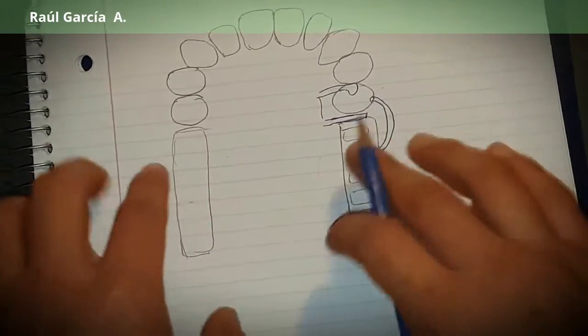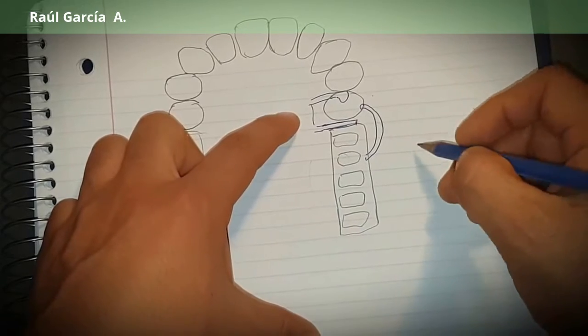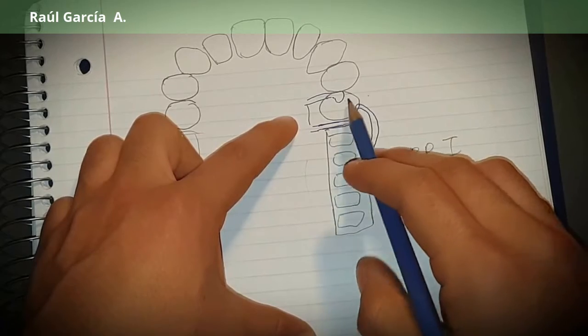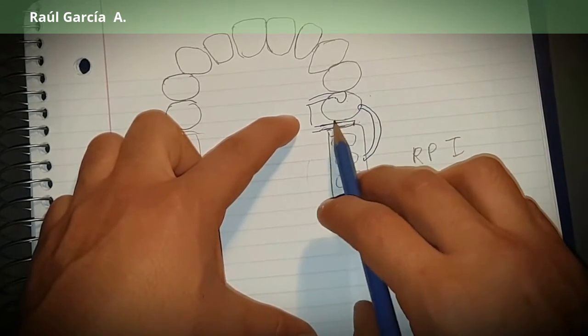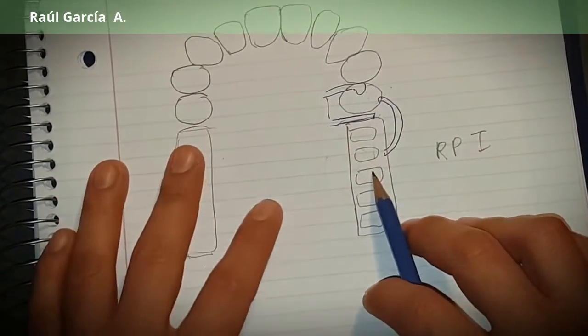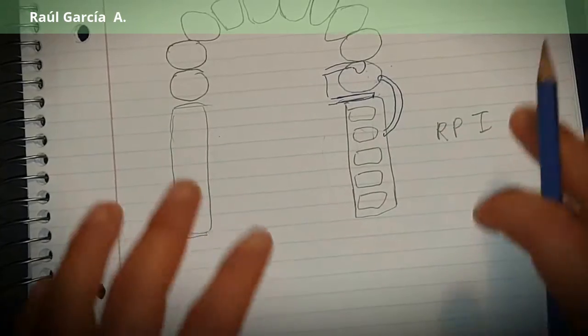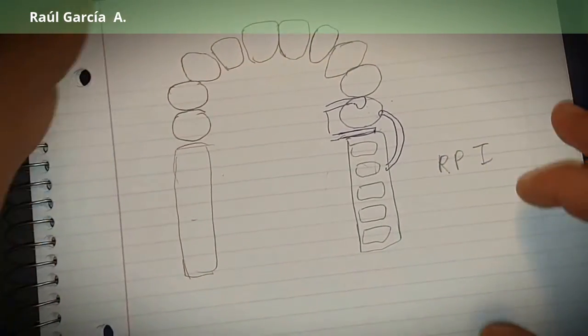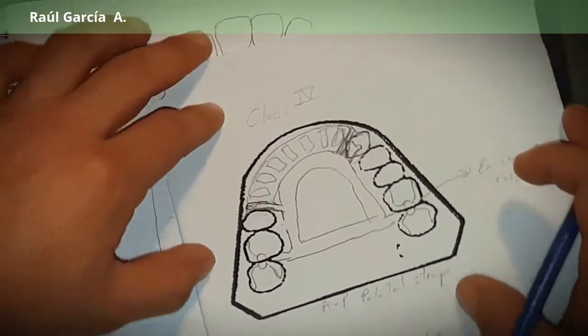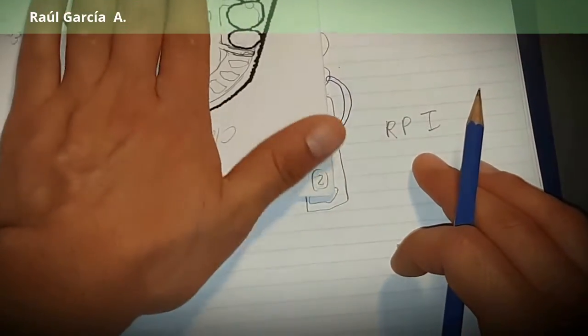In this case I'm choosing an RPI. So an RPI - the mesial rest, this is a guiding plane or the guide plate next to the saddle area, and the I-bar clasp. Why am I putting it like this? Because I want you to see it like this. This portion, I want you to see it like this so that you can draw it.